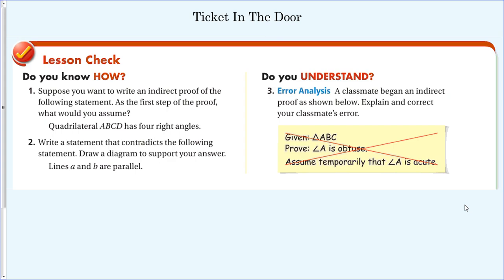Here's your ticket-in-the-door — copy this down and finish it for tomorrow. Number 1: suppose you want to write an indirect proof of the following statement — as the first step, what would you assume? 'Quadrilateral ABCD has four right angles.' Number 2: write a statement that contradicts 'Lines a and b are parallel' and draw a diagram to support your answer. Number 3: a classmate began an indirect proof as shown — explain and correct the classmate's error. Bring your answers to class tomorrow.